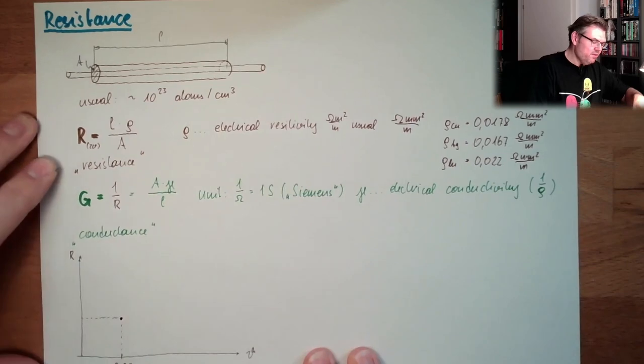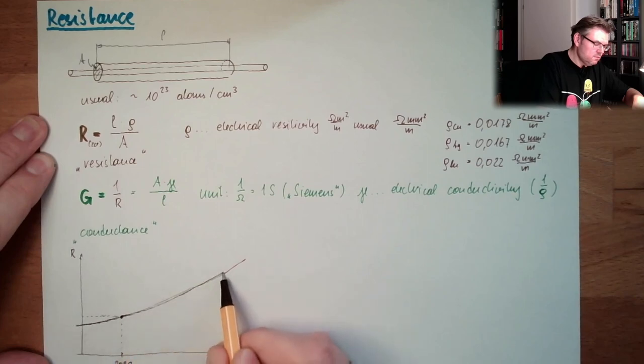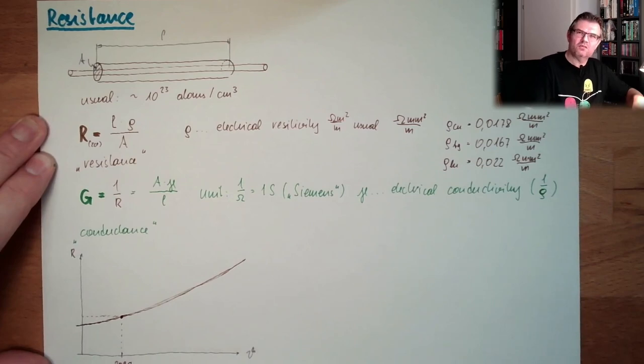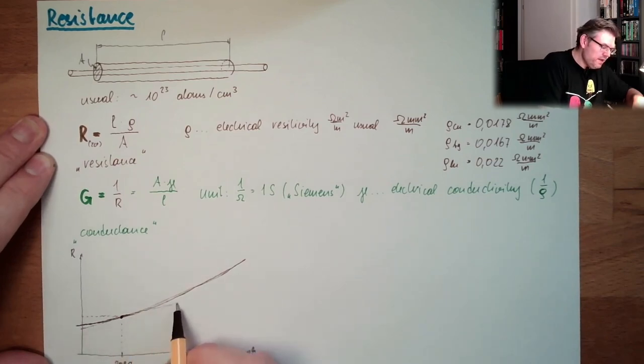And then the hotter it gets, the more resistance we have. And this is usually not linear. This is somehow like that. However, for electrical reasons, not talking about measurement now. Measurement is different. But for electrical reasons, we can say, okay, we take this. Make a linear approximation.